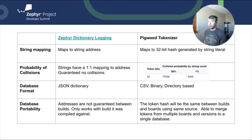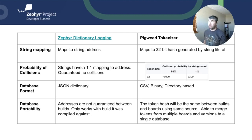How does this compare to Zephyr's dictionary logging? First, the string mapping is different. With Zephyr, the string address is paired with the string. The tokenizer uses a 32-bit hash generated from the string literal. With the hash algorithm, you may be concerned with collisions. With a 32-bit hash, you'll need to tokenize about 9,300 strings to have a 1% probability of a collision, and 77,000 strings for a 50% chance of collision. As Zephyr uses the address of the string, there's no chance of a collision at all.